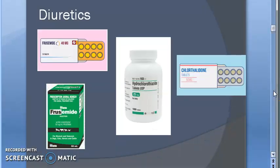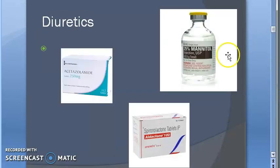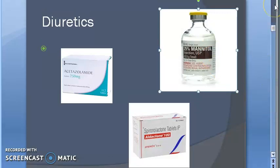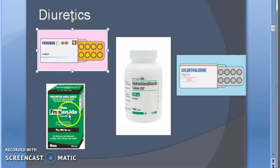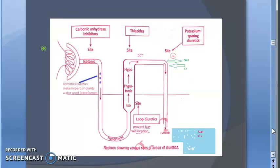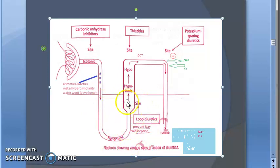Most diuretics are given orally except osmotic diuretics, which are given by injection. For loop diuretics you have the option of IV — furosemide comes as tablets and can also be given IV. The site of action: loop diuretics work on the loop of Henle, specifically in the ascending limb of the loop of Henle, and within that, the thick ascending part.